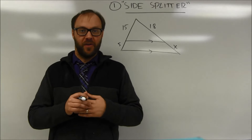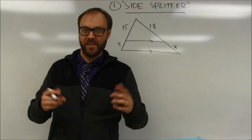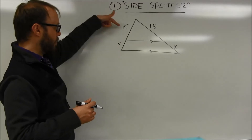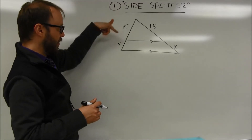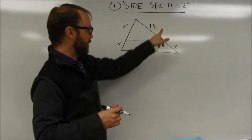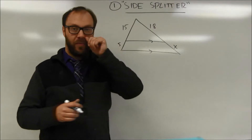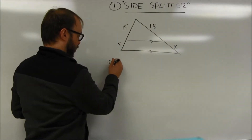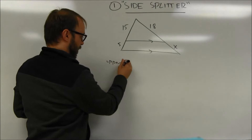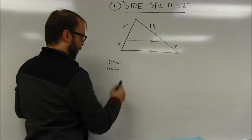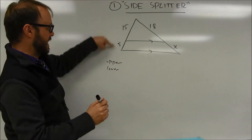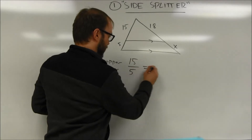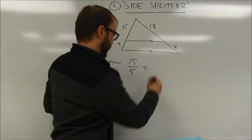There are a lot of possibilities — some can be very basic. The basic concept is that the upper part over the lower part for the left equals the upper part over the lower part for the right. I would encourage you to label your proportions when you set them up. For example, doing upper part over lower part: 15 over 5 would be equal to 18 over x.